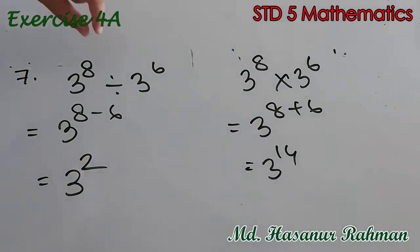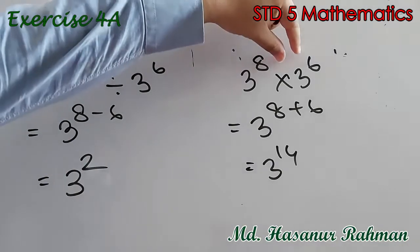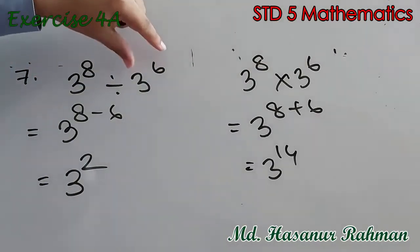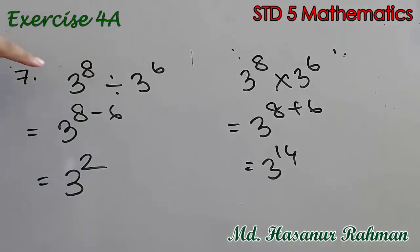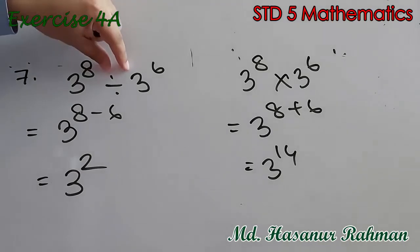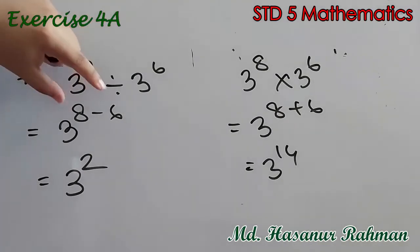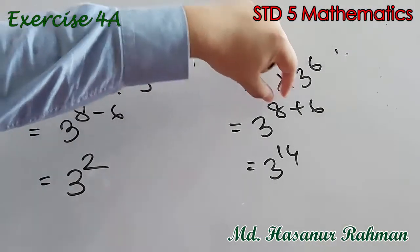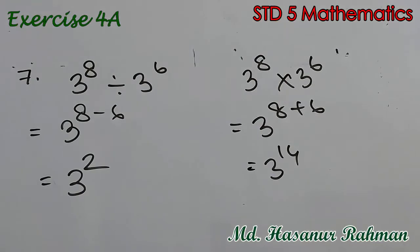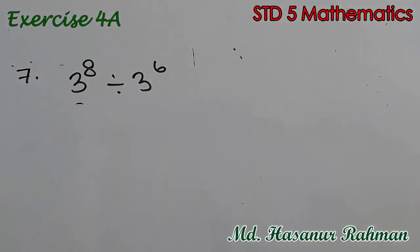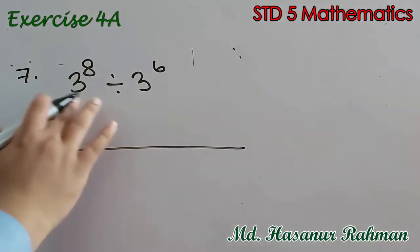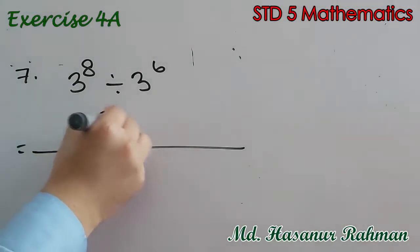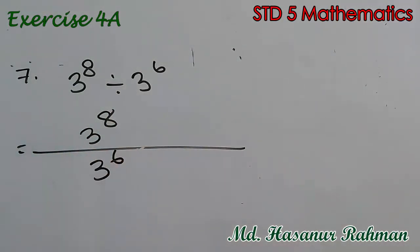Just to understand: if there is a division sign and both bases are the same, we subtract the power; if there is a multiplication sign, we add the power. If you want to understand this problem clearly, you can also solve it by writing 3 to the power 8 divided by 3 to the power 6 as a fraction.